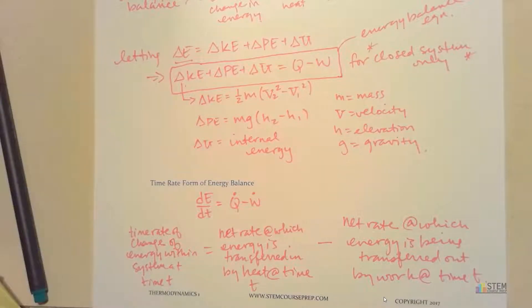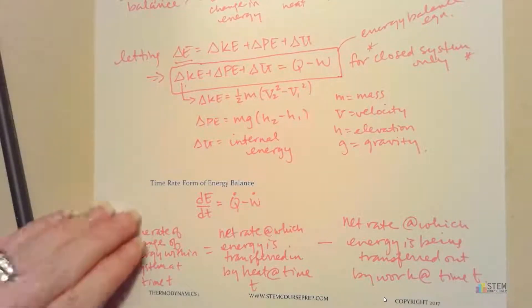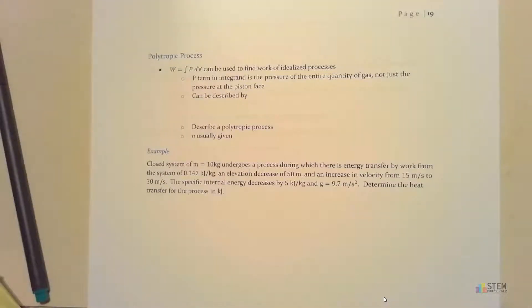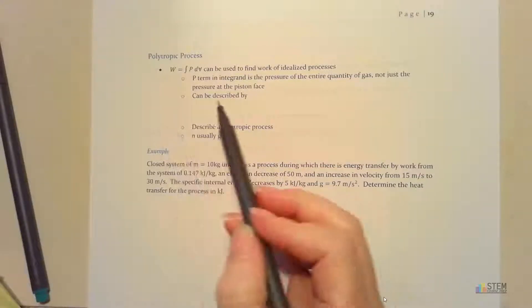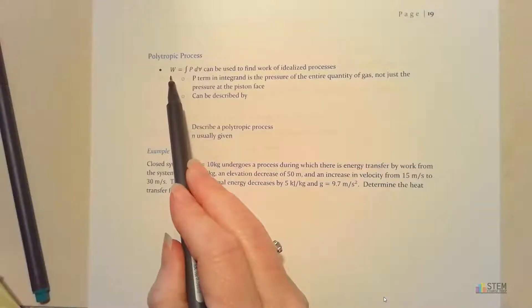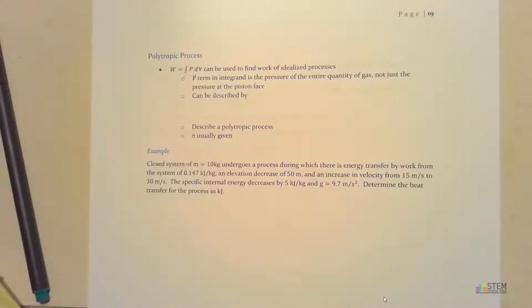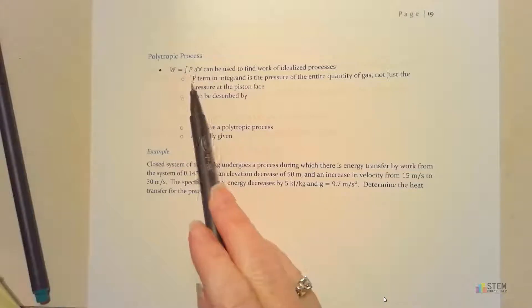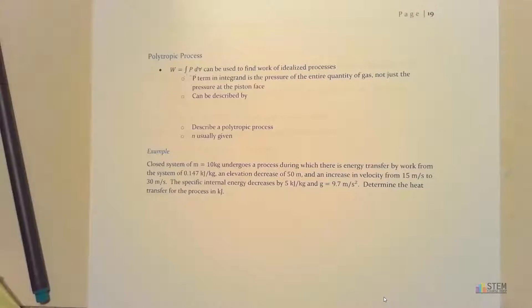Last thing I want to talk about before we get to examples is something called a polytropic process. And we're going to talk about this because we're going to have these in quite a few of our examples. Now, we've got this equation right here. Our work equals the integral of pressure times the change in volume. That can be used to find the work of an idealized process. This P term in the integrand, that's going to be the pressure of the entire quantity of gas, not just the pressure at the piston face.